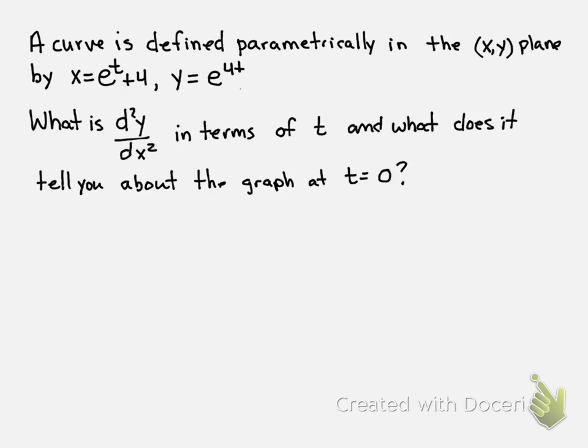In this case, you've been given a parametrically defined curve x and y, and you've been asked for d²y/dx², or the second derivative, in terms of t. Then, what does it tell you about the graph at t equals 0?